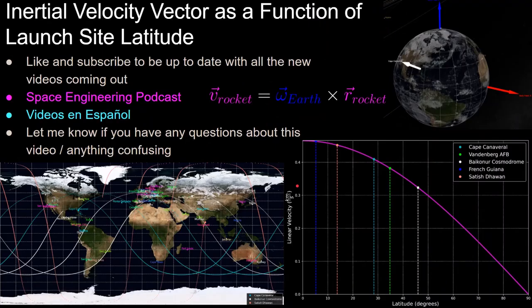In the next video, we'll be going over the inertial velocity of the rocket as it's sitting on the launch pad as a function of the latitude of the launch site, and why the magnitude of the velocity is higher the closer you are to the equator. So that's it for this video — let me know if you have any questions or comments, leave a like and subscribe to stay up to date with the rest of the videos, and I'll see you in the next one.